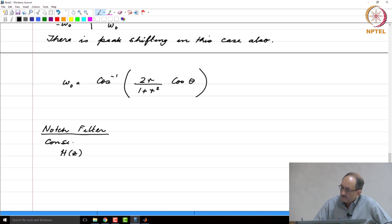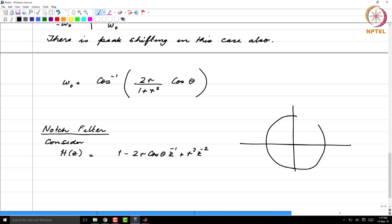Now, let us consider h of z which is 1 minus 2 r cos theta z inverse plus r squared z to the minus 2. All we have done is we have inverted the previous example. We have taken the simple resonator and this is the transfer function which is 1 over the previous transfer function and hence, poles become zeros and zeros become poles.